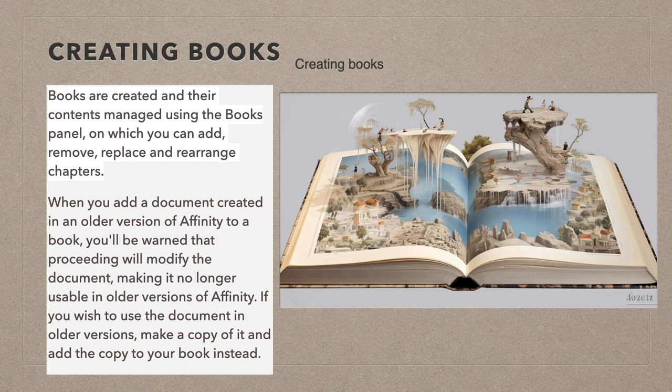When you add a document created in an older version of Affinity to a book, you will be warned that proceeding will modify the document, making it no longer usable in older versions of Affinity. If you wish to use the document in older versions, make a copy first and add the copy to your book instead.